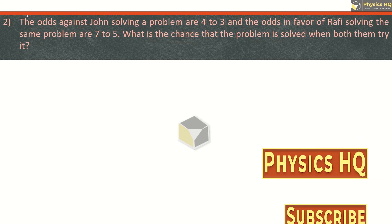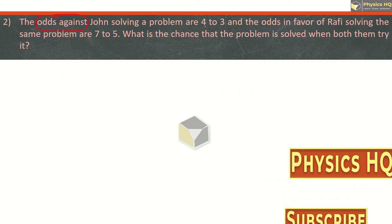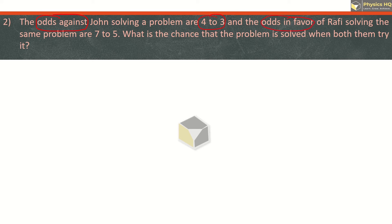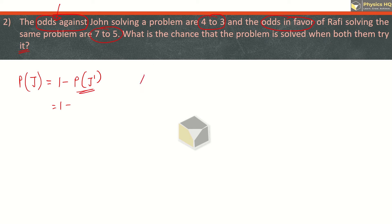Let us check out the next sum. The odds against John solving a problem are 4 to 2 and the odds in favor of Rafi solving the same problem are 7 is to 5. What is the chance that the problem is solved when both of them try it? Let J be the event that John can solve the problem. Here odds against are given, so probability of J is 1 minus probability of J dash, which is 1 minus 4 by 7, giving us 3 by 7.